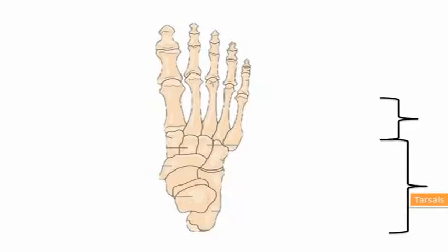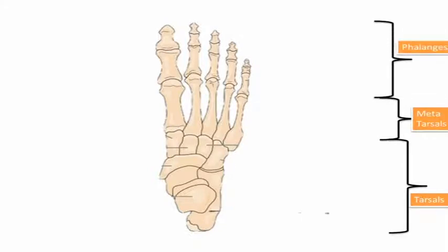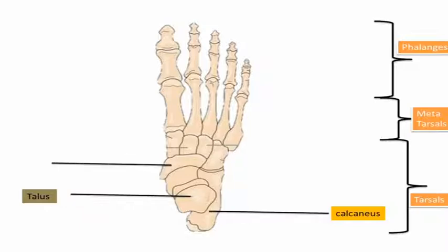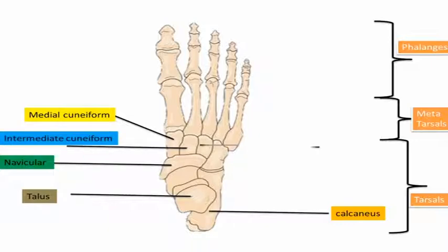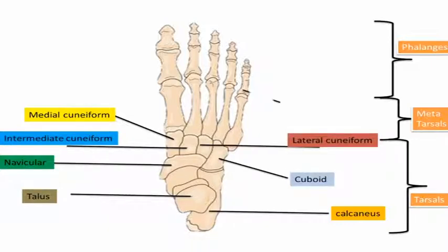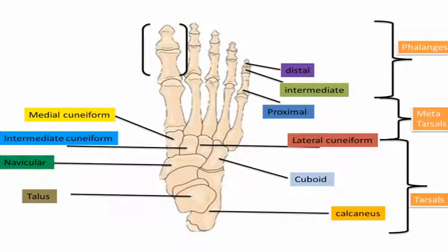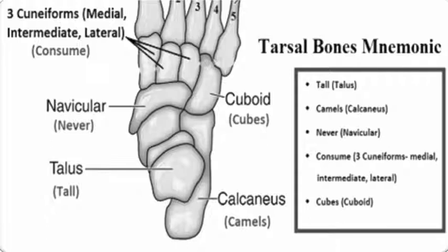The foot is divided into three regions: the tarsus, metatarsus, and phalanges. In the tarsus there are seven bones: the calcaneus, talus, navicular, medial cuneiform, intermediate cuneiform, lateral cuneiform, and cuboid. The phalanges are divided into proximal, intermediate, and distal phalanges. The big toe of the foot is also called the hallux. These bones can be remembered by the mnemonic 'The Tall Camel Never Consumes Cubes': T for talus, C for calcaneus, N for navicular, and the cuneiforms and cuboid for the rest.